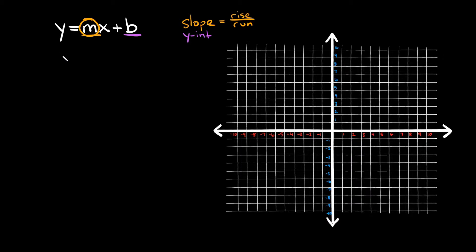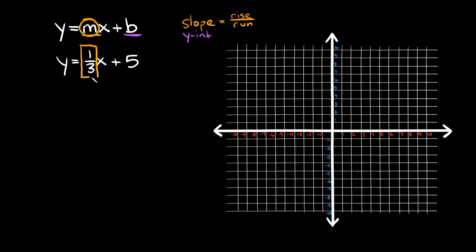Let's do a few examples. Say you were asked to graph this line: y is equal to one-third x plus five. There are two main things to notice: whatever number is next to the x is your slope, and whatever number is at the very end is your y-intercept.